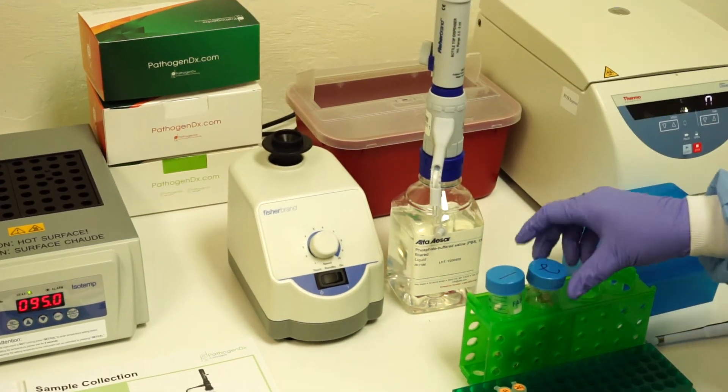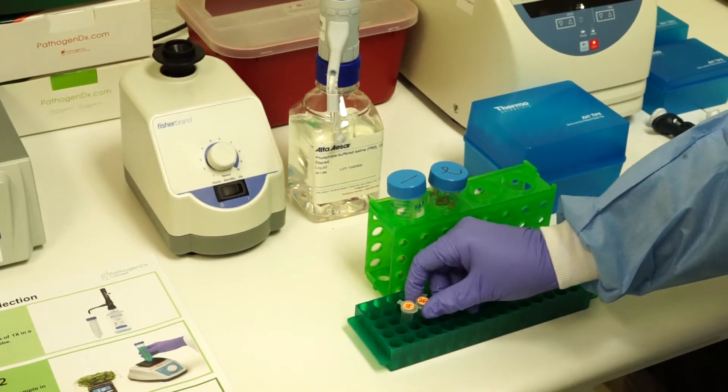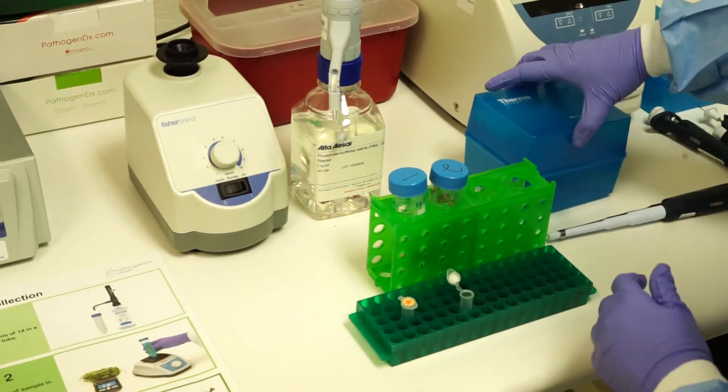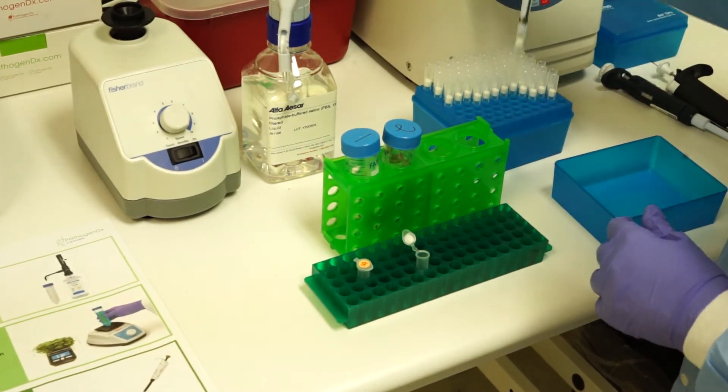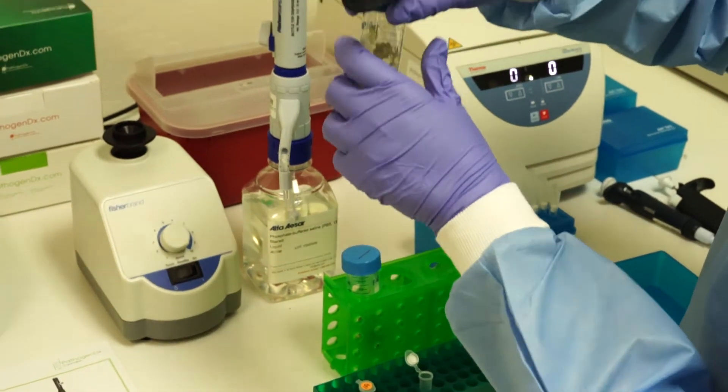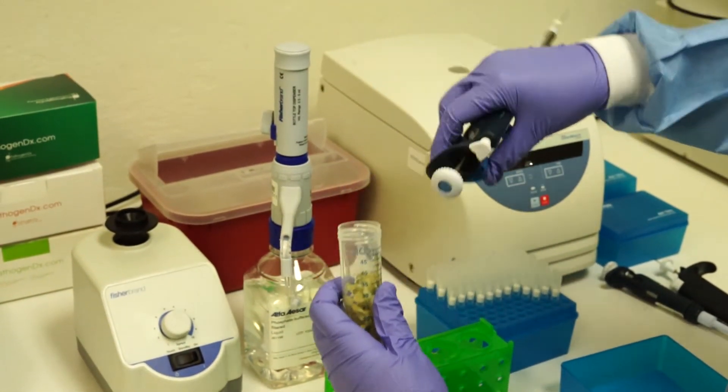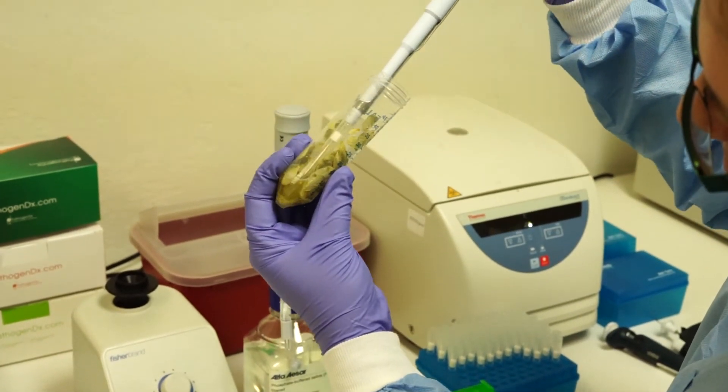Once you've mixed your sample, transfer 1 ml into the appropriate 1.5 ml tube. Make sure your pipetter is set to 1 ml and carefully remove 1 ml of solution by avoiding as much plant material as possible.